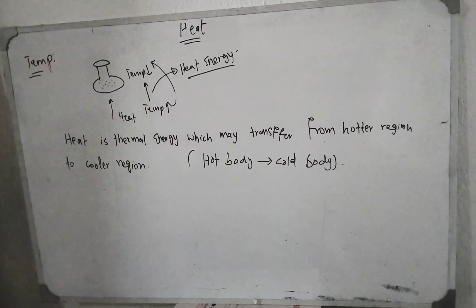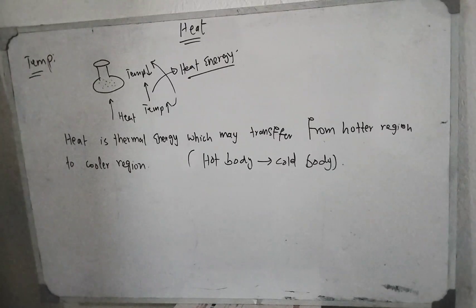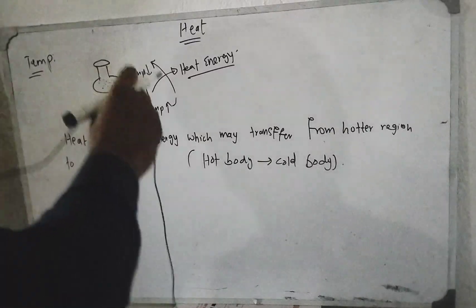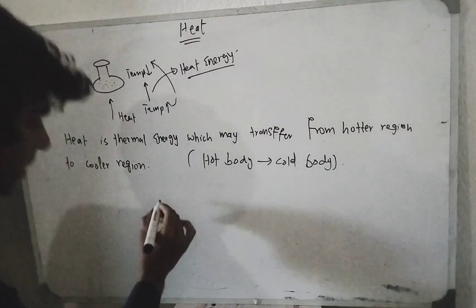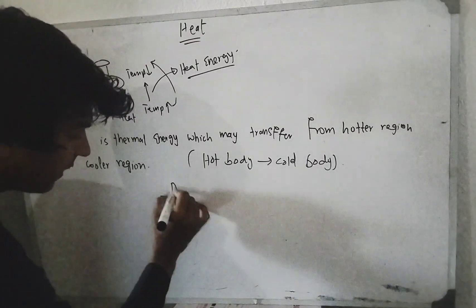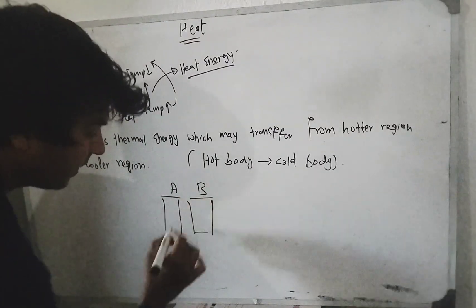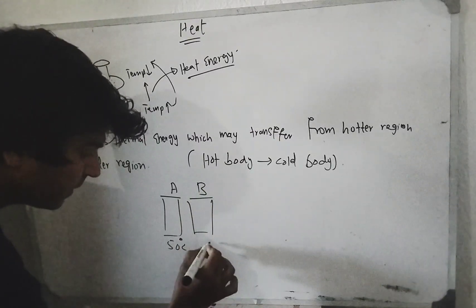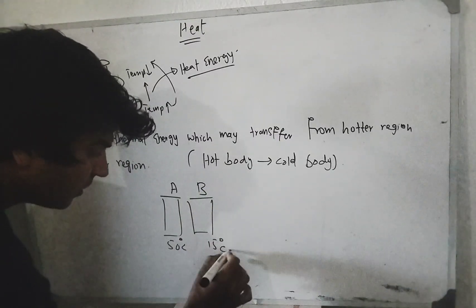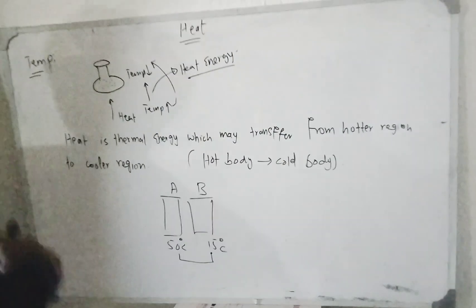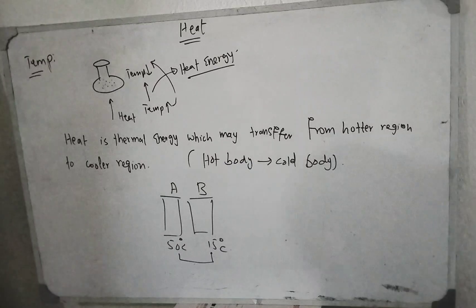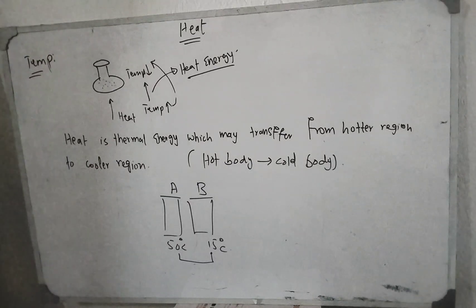Let's suppose there are two objects in thermal contact. This is a hot body and this is a cold body. Body A has a temperature of 50 degrees centigrade, and body B has a temperature of 15 degrees centigrade. Because of the temperature difference, heat flows from the hotter body towards the cooler body.